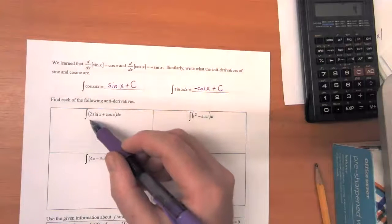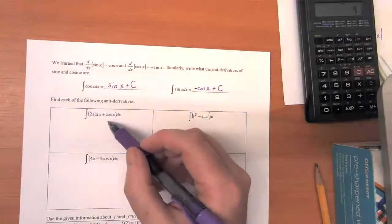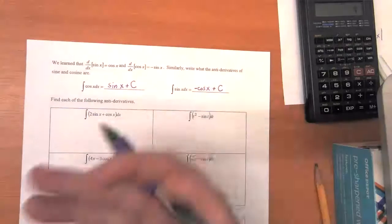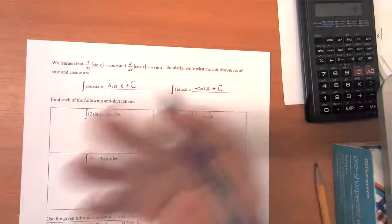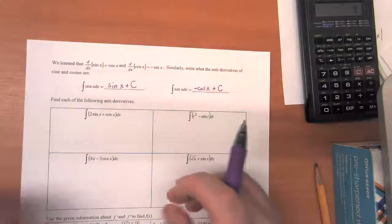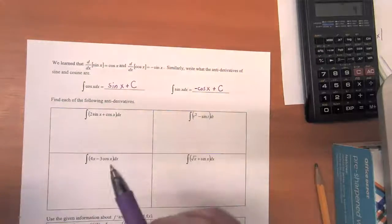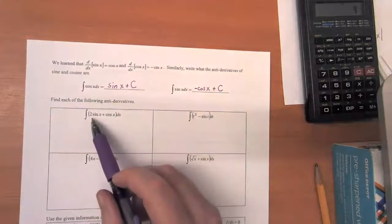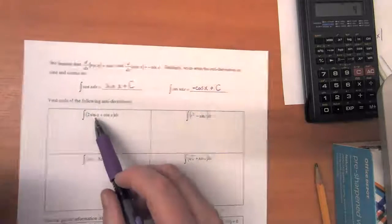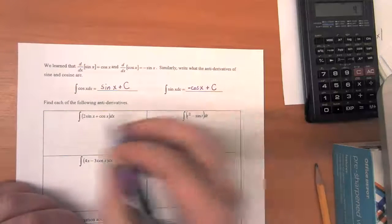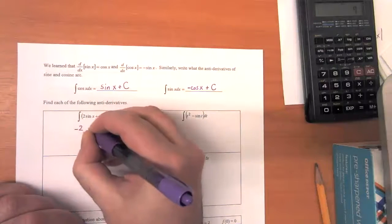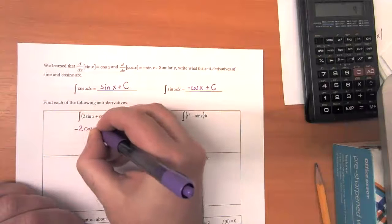So the antiderivative of 2sin(x) + cos(x), we're just going to go through and do the same tricks we were doing on the last page. We're just going to find the antiderivative of each term in this.